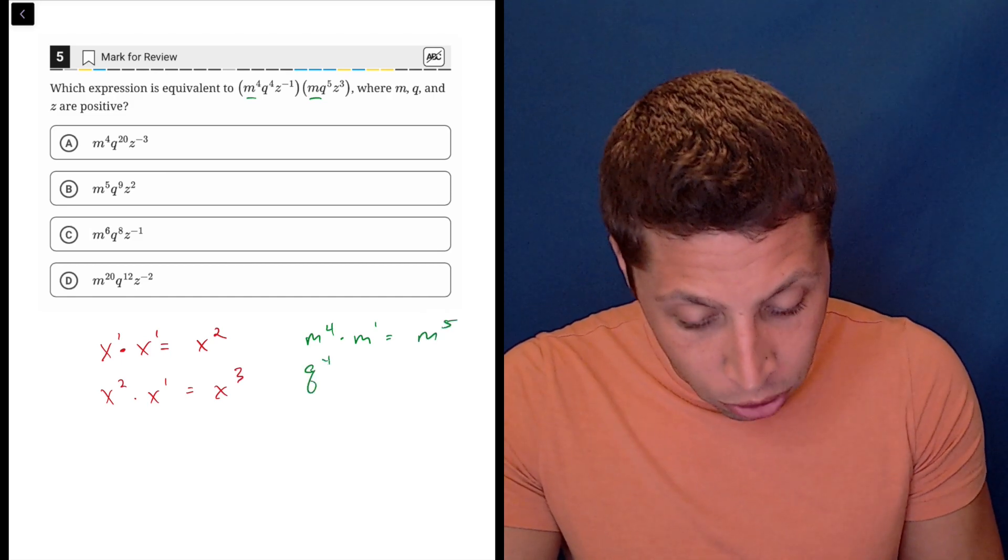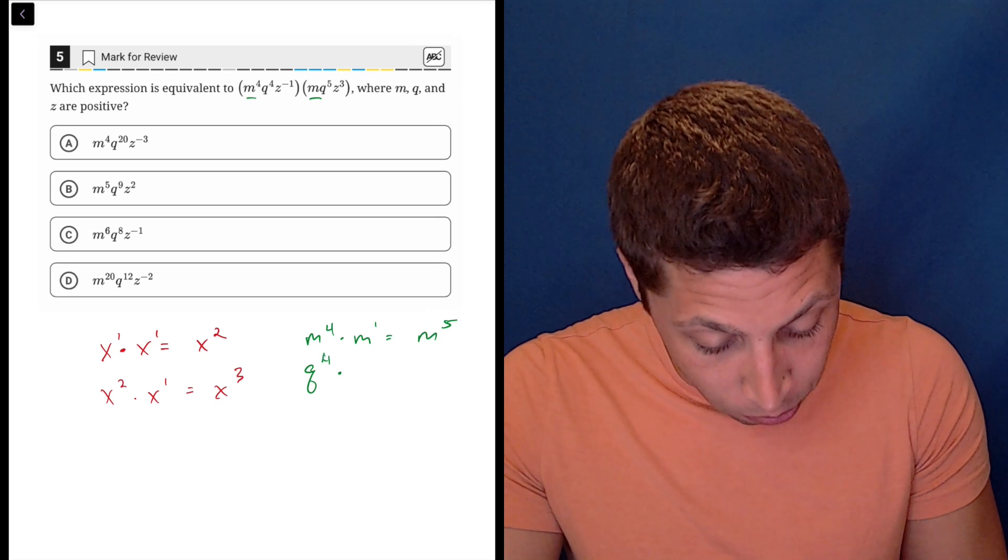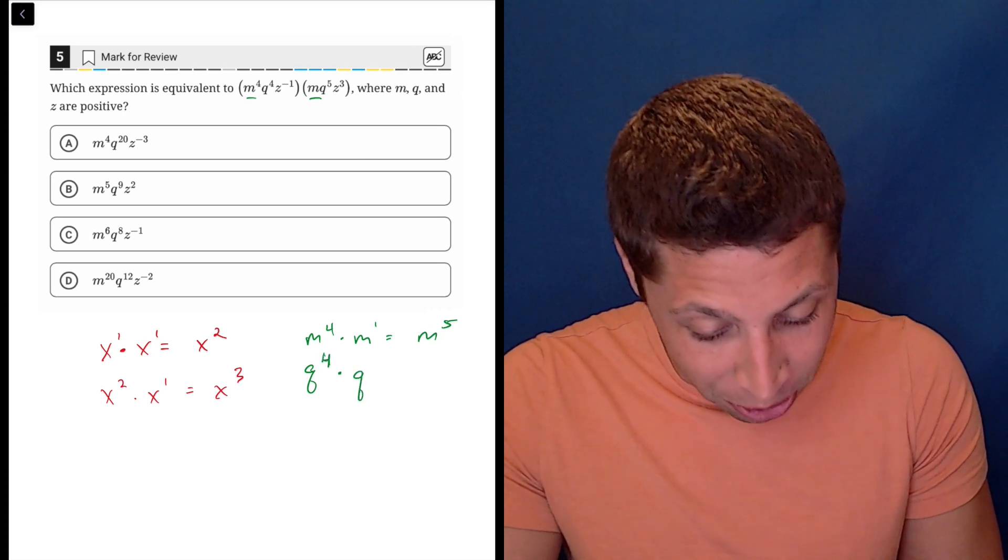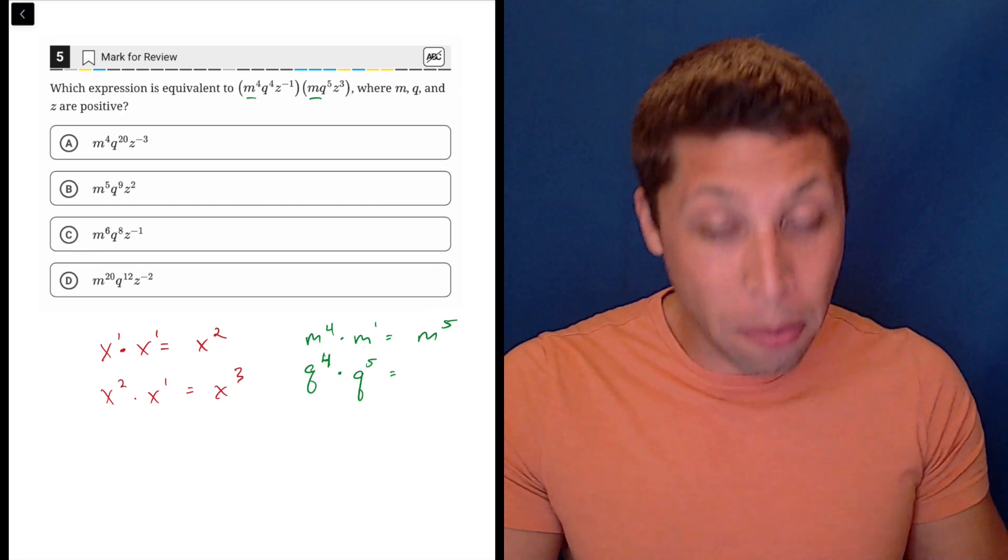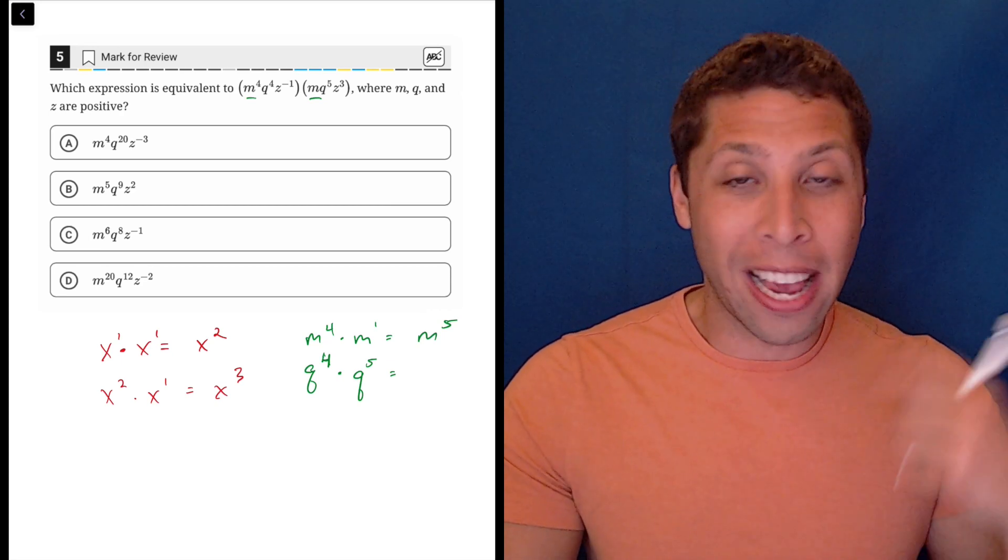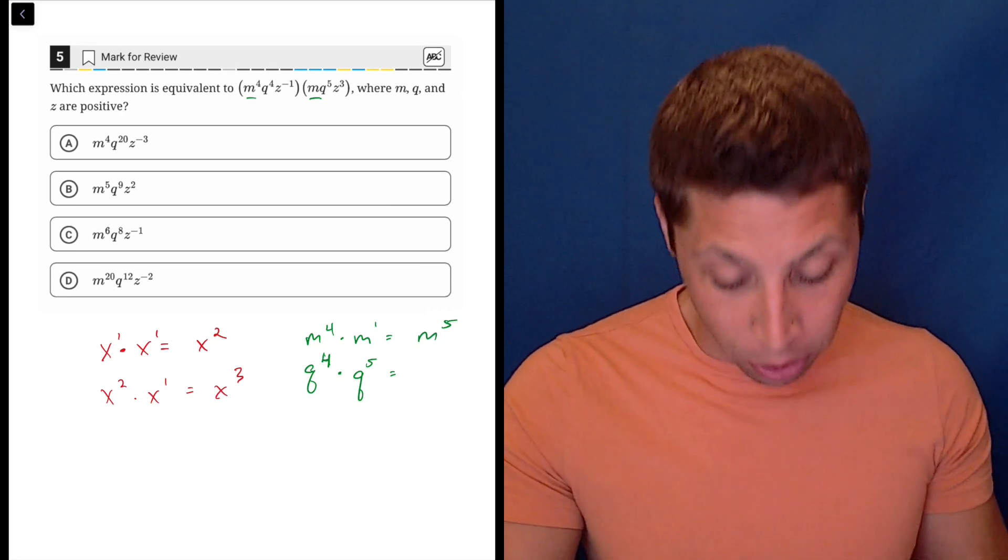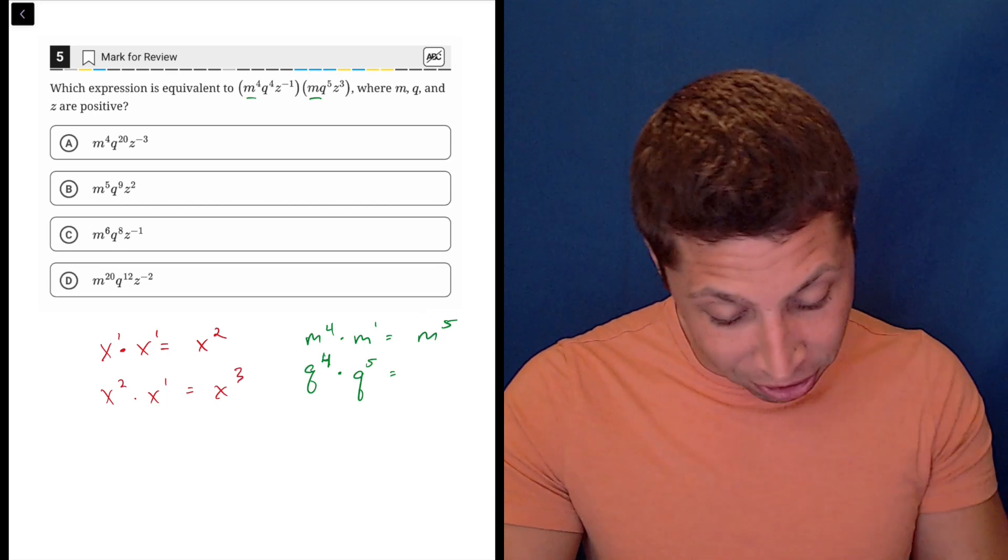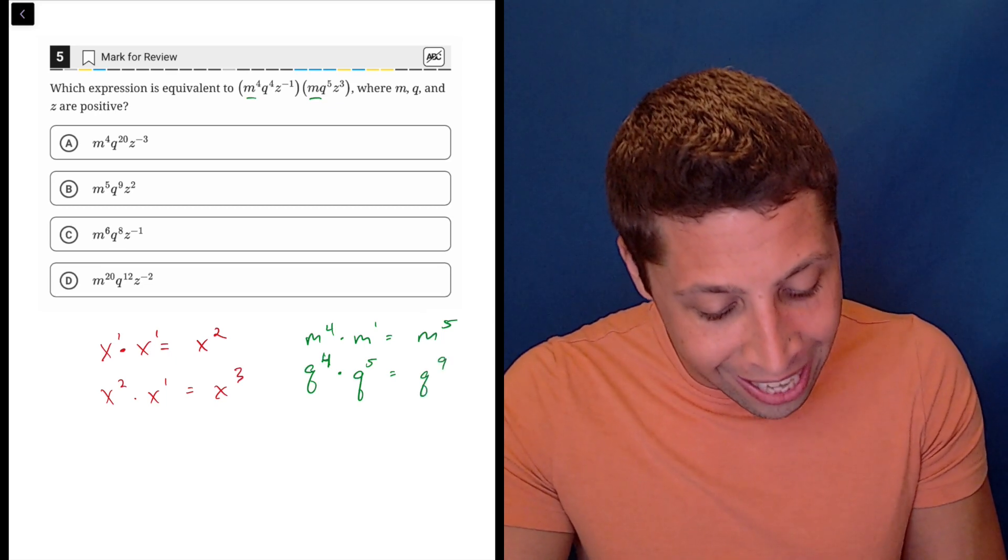We have q to the fourth times q to the fifth. Now remember those are being added. I think this is where we start to get tempted because they're bigger numbers to be like, oh, that's q to the twentieth. No, no, no. That is an answer, but no, we don't want that. This is going to be q to the ninth.